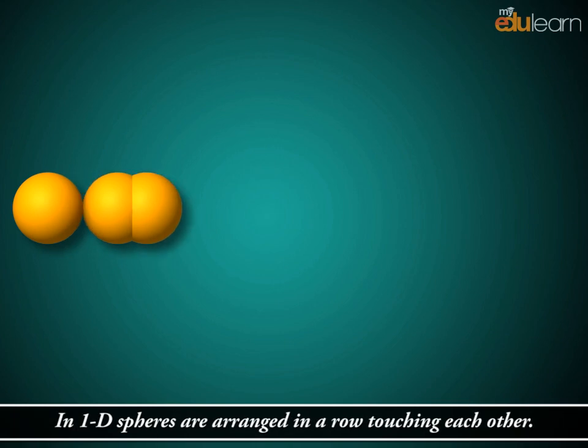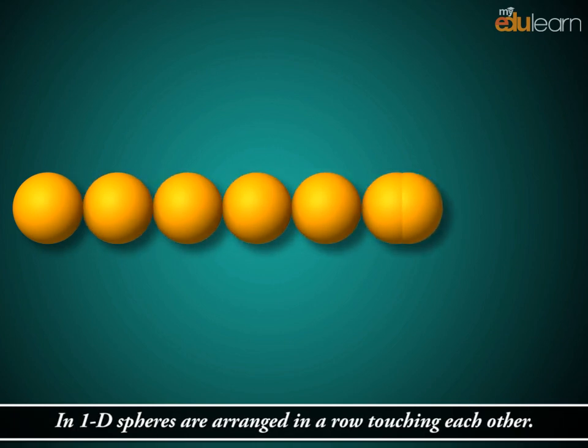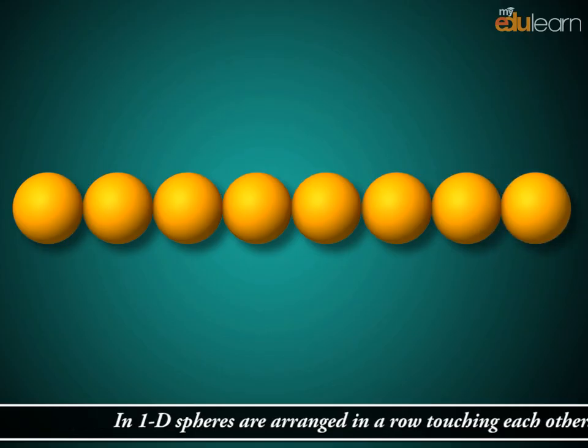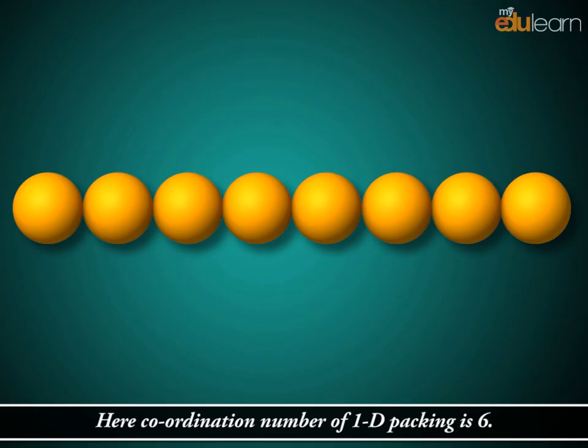In 1D, spheres are arranged in a row touching each other. Here, coordination number of 1D packing is 6.